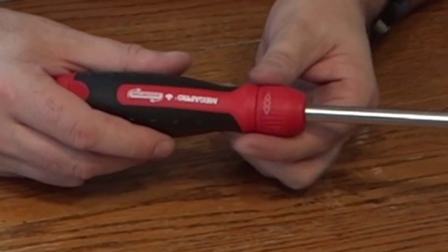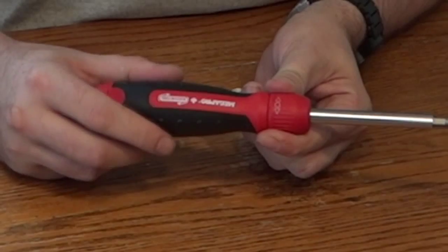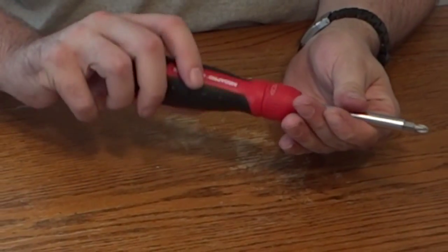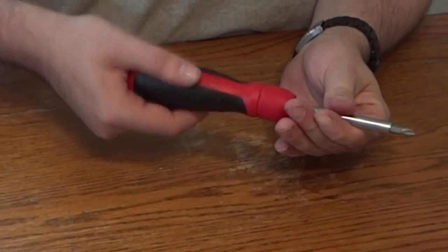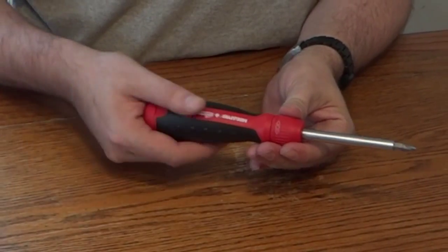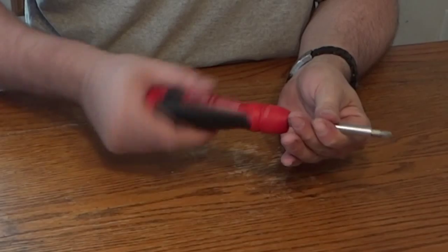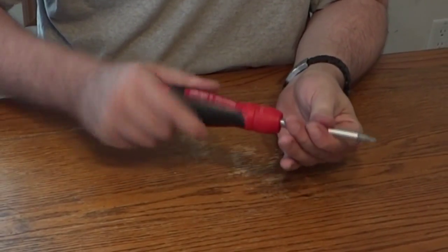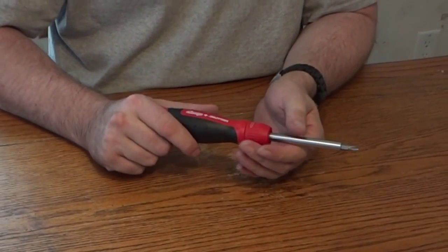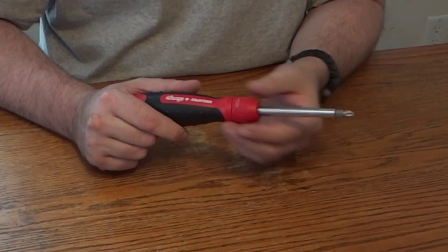And on here there's a little design which lets you know which way your ratchet is going to be working. So turn it to the right, and that's the way the ratchet is going to engage. Turn to the left, it's going to engage for unscrewing. And then back into the middle, the ratchet locks for starting or when your screw is that loose that the ratchet is not going to engage.